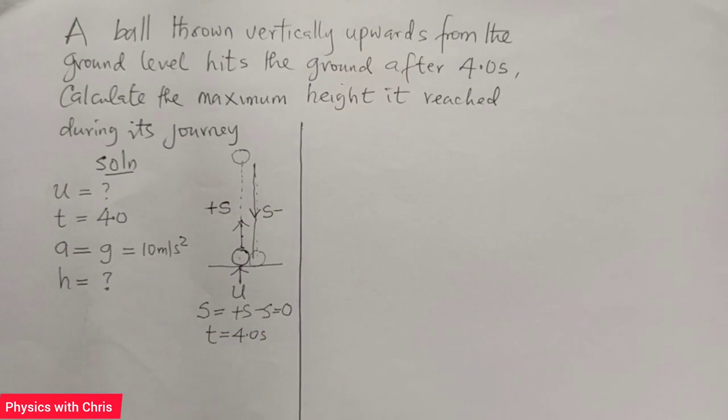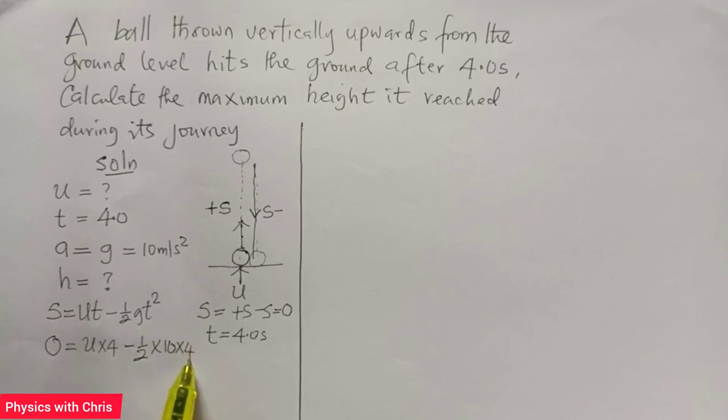So to find initial speed first of all, we can use the second equation of motion: S equals UT minus half GT squared. Now when the displacement is zero, this is U times four, the time is four seconds, minus half times ten times four squared.